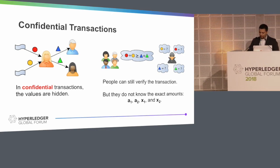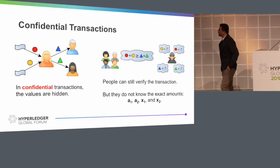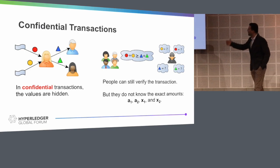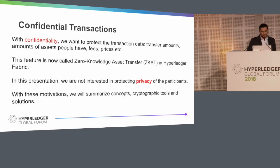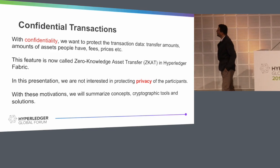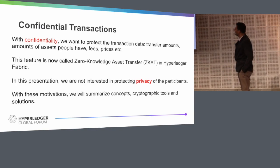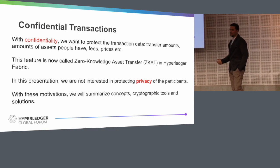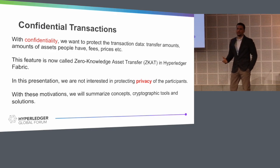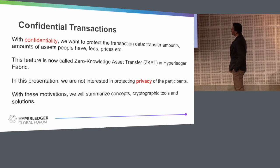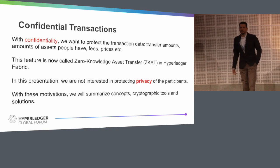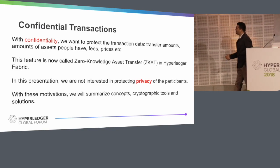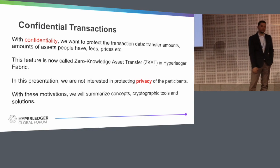So we introduced the concept of confidential transactions. In confidential transactions, the values are hidden — we don't see the exact amounts, but we still need to verify that the inequality holds and that the transaction is valid. In this presentation, we are not interested in the privacy of the participants — Hyperledger has an identity feature for that. Rather, with confidentiality, we are interested in hiding the values in the transaction data: the amount of transfer, the amount of assets people have, the fees, prices, and so on. This feature is now called Zero Knowledge Asset Transfer in Hyperledger, but the mathematics behind it is really complex and performance-wise pretty hard to grasp.